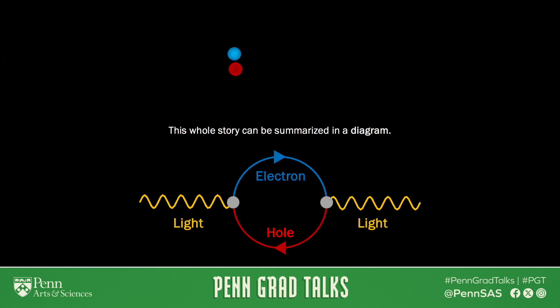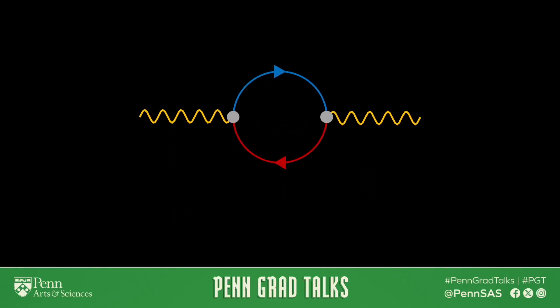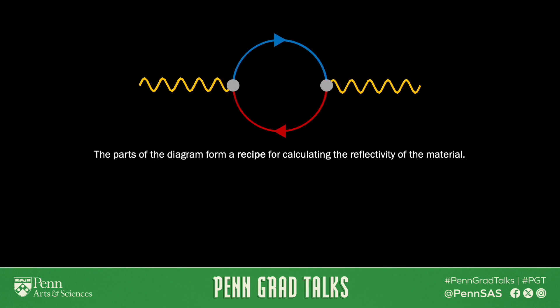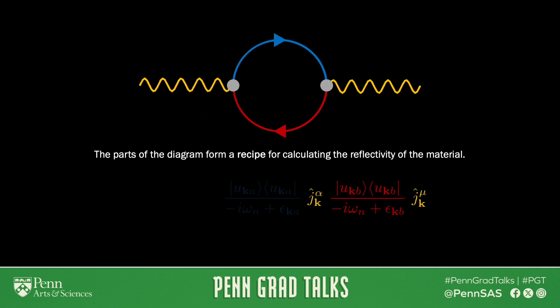We can summarize this whole story in a little doodle. Light comes in, creates an electron and a hole, and an electron and a hole can come back together again to make light. This is how materials reflect light. And the best part is, this is more than just a doodle — it's math in disguise. Every part of this diagram has a specific mathematical meaning that a physicist can use to actually calculate the reflectivity of a material.